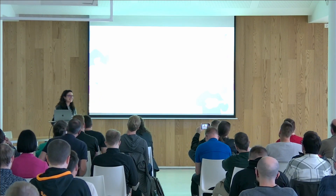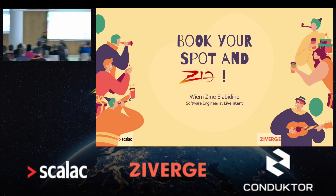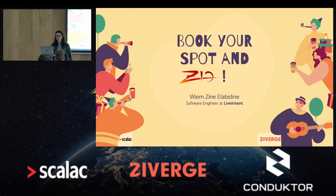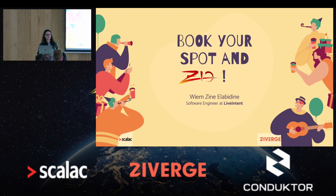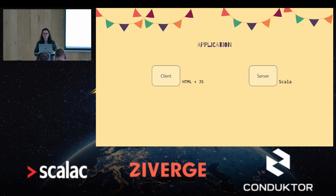In this talk I will show an application that I've implemented using different ZIO libraries that are compatible with the latest release candidate of ZIO 2. The application is called BookYourSpot and it consists of a client and server. The client is implemented using HTML and JavaScript — it's a simple web application — and the server is using Scala.